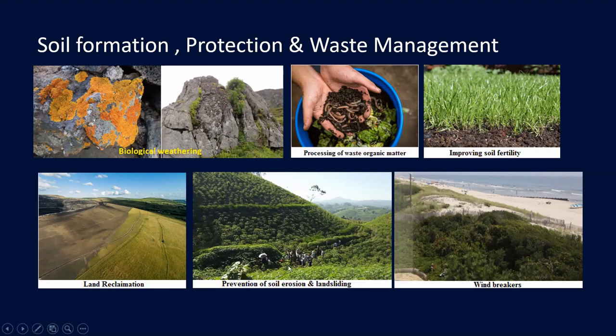Biodiversity — plants and animals — prevents soil erosion and landsliding. They act as windbreakers on river beaches and river edges, stopping soil erosion. Soil protection through the maintenance of biological diversity can preserve the productive capacity of the soil. They safeguard coastlines and riverbanks and prevent the degradation of coral reefs and riverine and coastal fisheries by siltation.